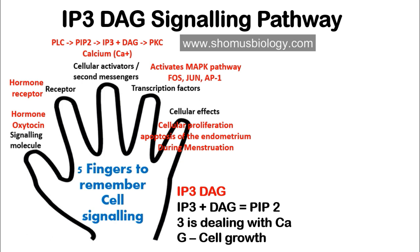IP3 allows calcium to move out from the endoplasmic reticulum into the cytosol — that's how to remember IP3's role. For DAG, think of 'G' for growth: DAG is linked to cell growth and proliferation. So PIP2 is broken down into IP3 and DAG by PLC; IP3 deals with calcium ions, and DAG deals with growth. That's an easy way to remember and recall this pathway.